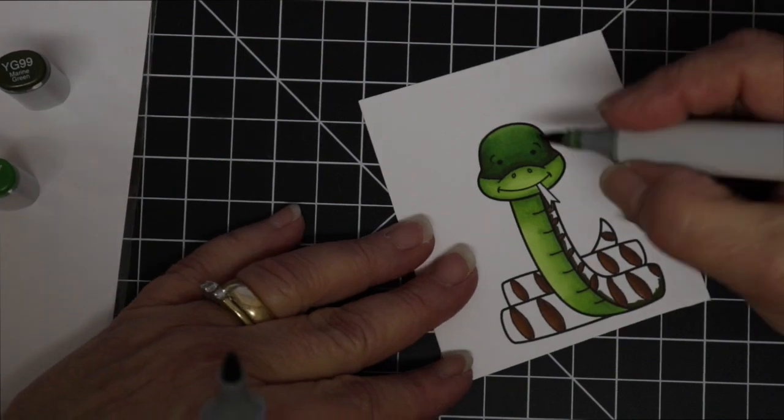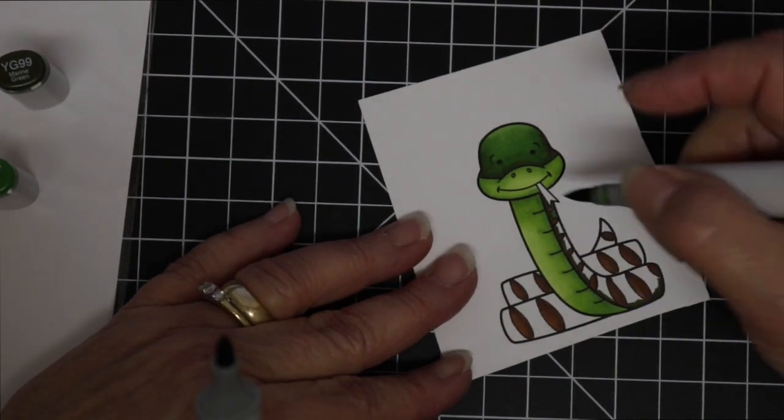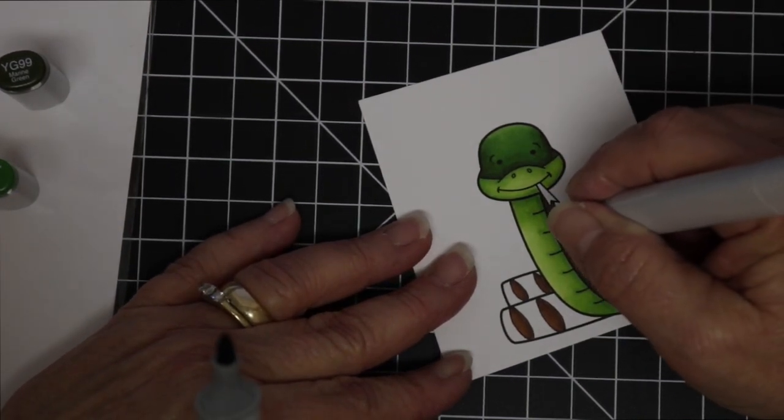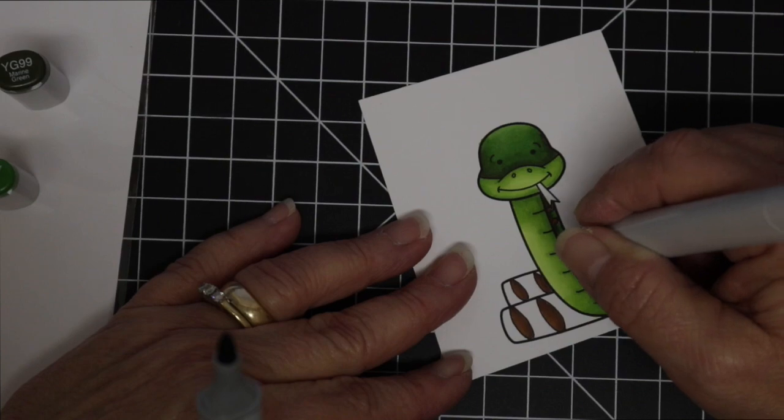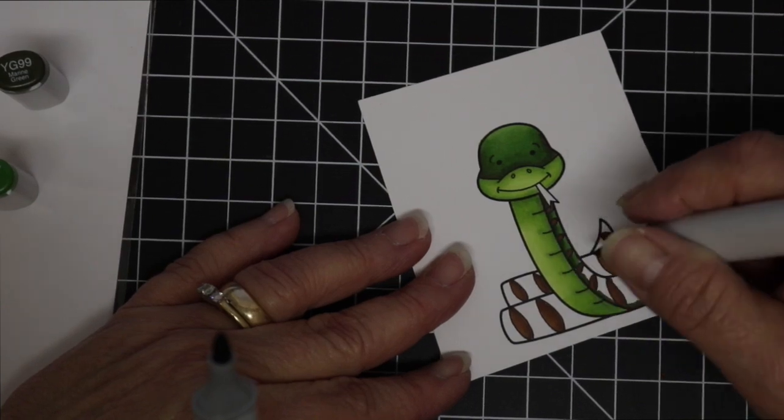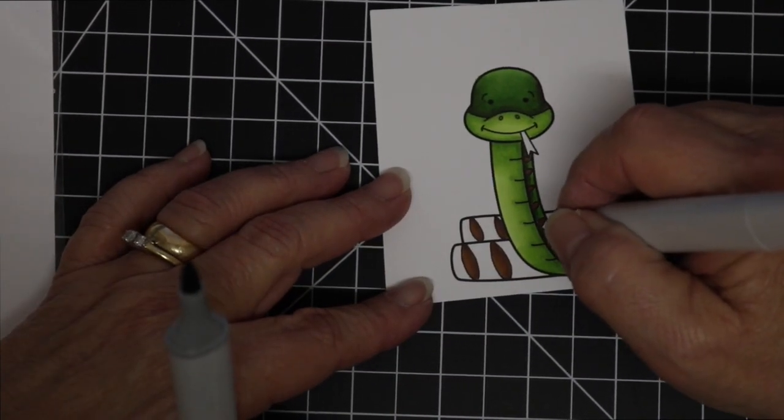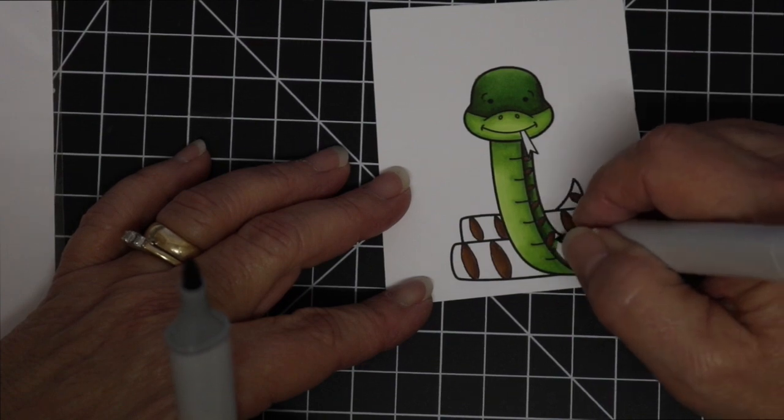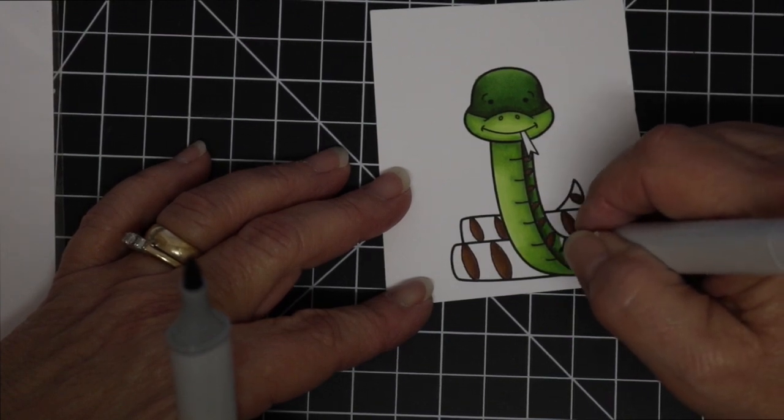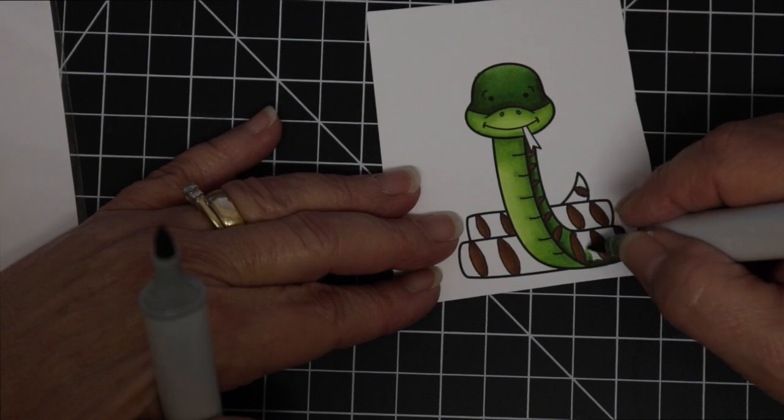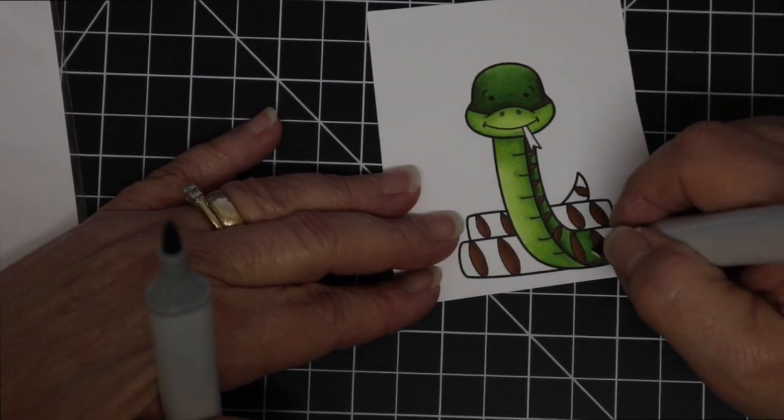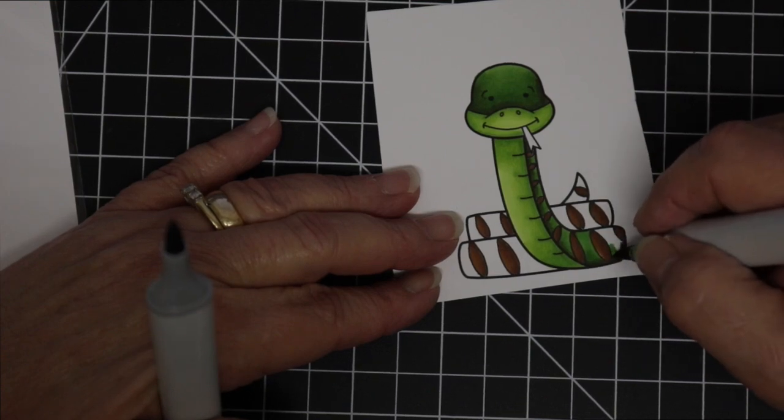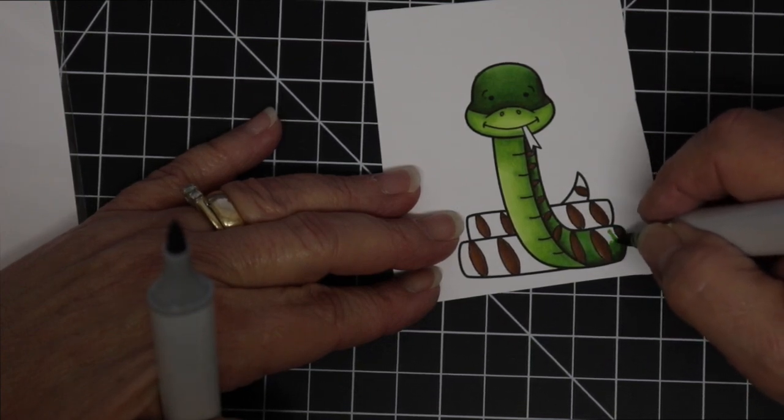Now I did go straight to my image with these without testing them so if you are not comfortable doing that then by all means just grab a scrap piece of Neenah Solar White or whatever cardstock you use and try them out before you go to your image. If you use the scrap you're not going to lose anything, you're going to throw that scrap away anyway.